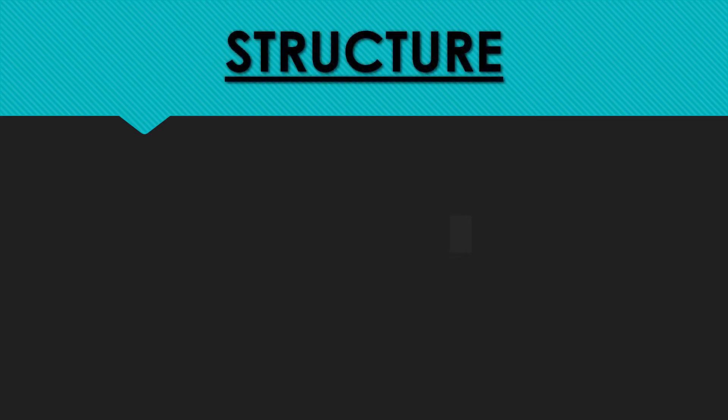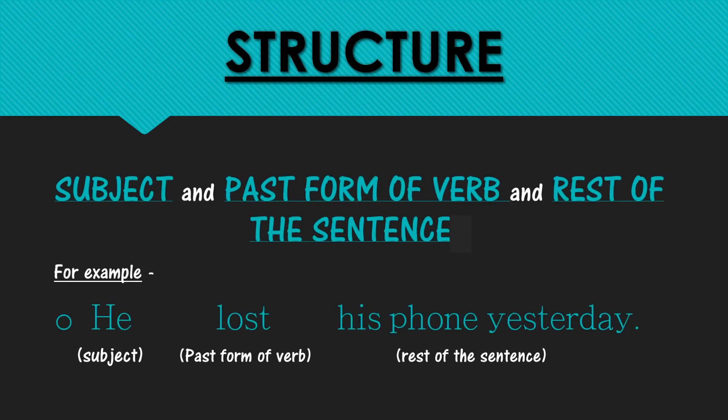Let us understand the structure of how to form simple past tense. The structure is: Subject + past form of verb + rest of the sentence. For example: 'He lost his phone yesterday.' Here, 'he' is the subject, 'lost' is the past form of the action verb 'lose', and 'his phone yesterday' is the rest of the sentence. The action had already happened.